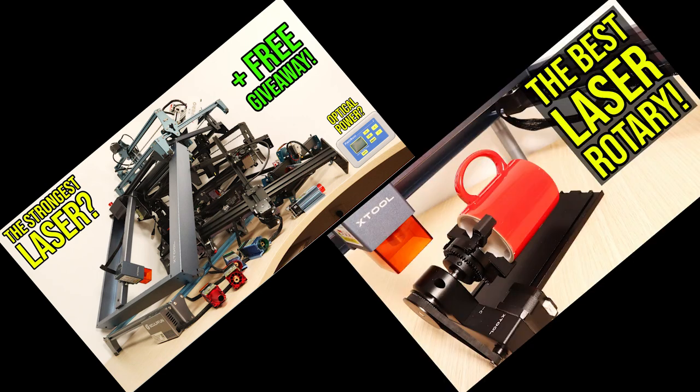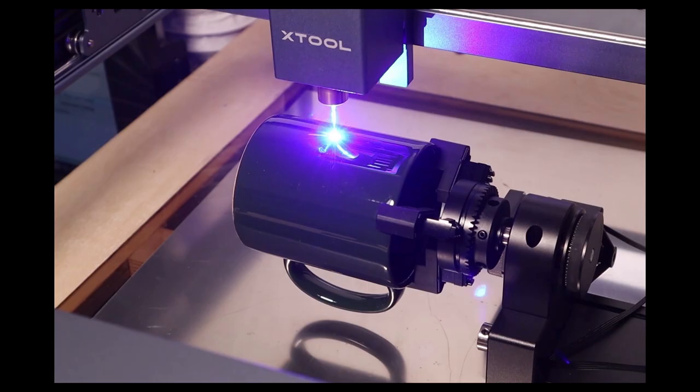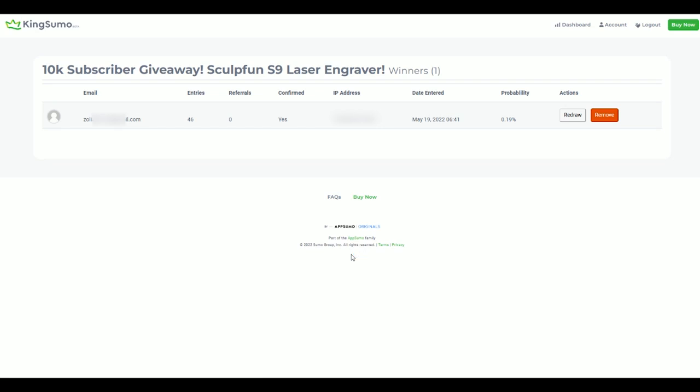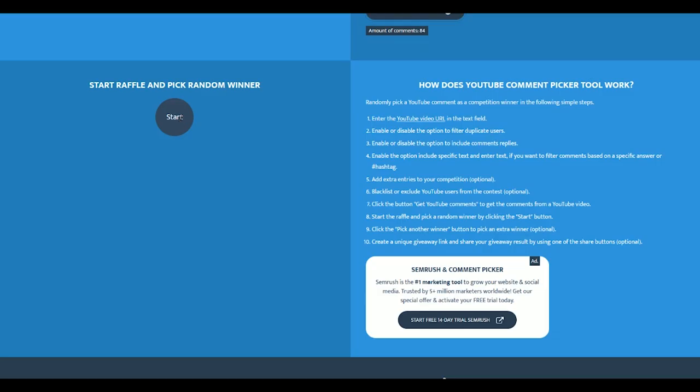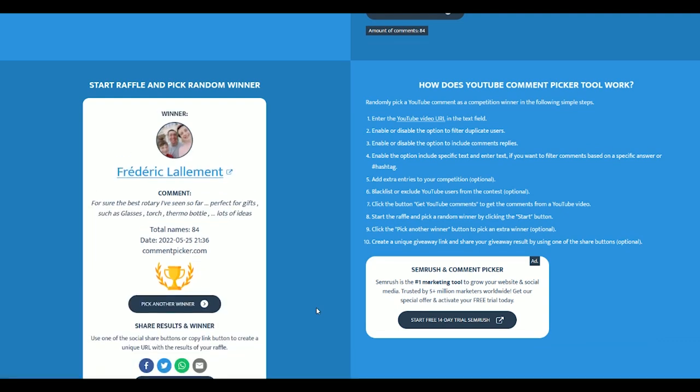Speaking of giveaways, I have two winners to announce from my previous two videos. The 10k subscriber giveaway and the Xtool RA2 rotary giveaway. Let's pick the winner. The winner of the 10k subscriber giveaway is Zoltan from Hungary. And the winning comment from the Xtool giveaway is Frederick Lallament. Congrats to both winners.